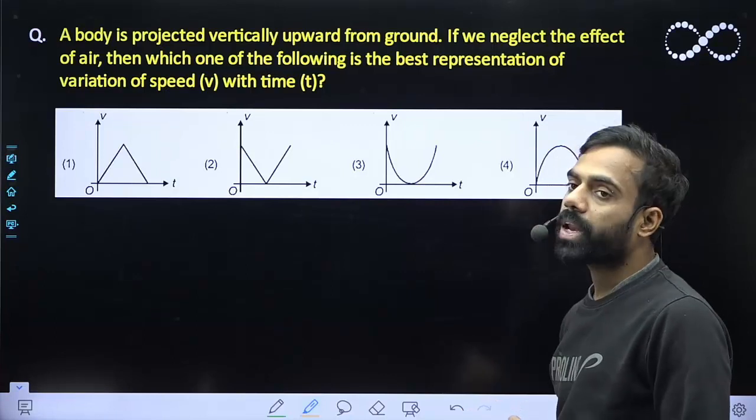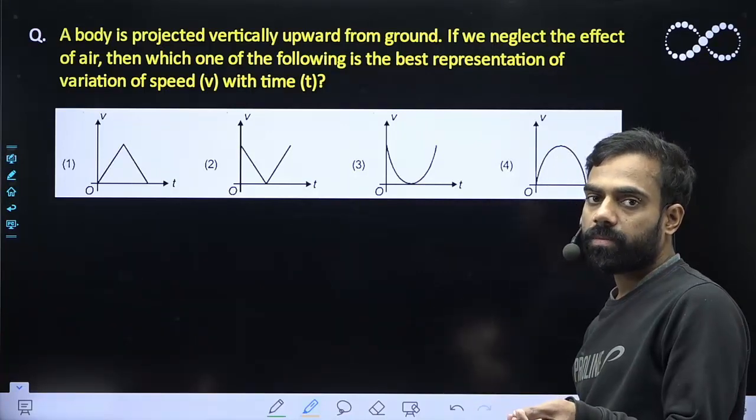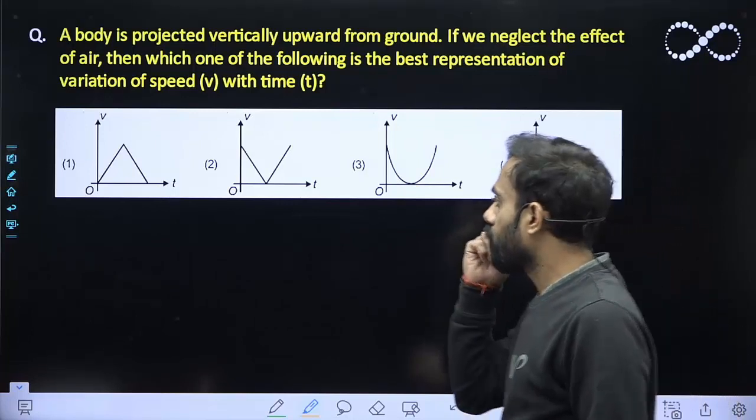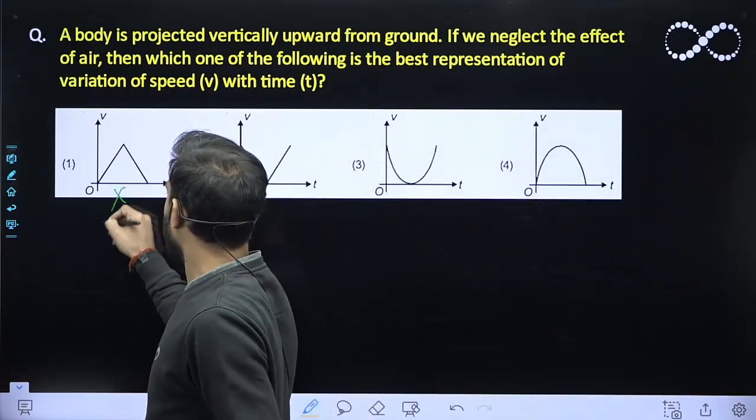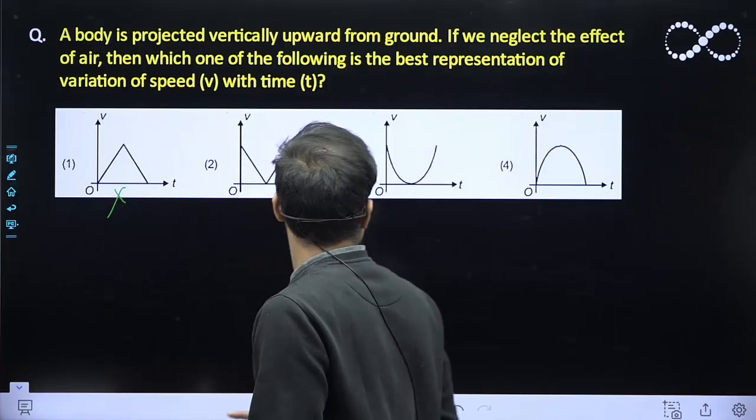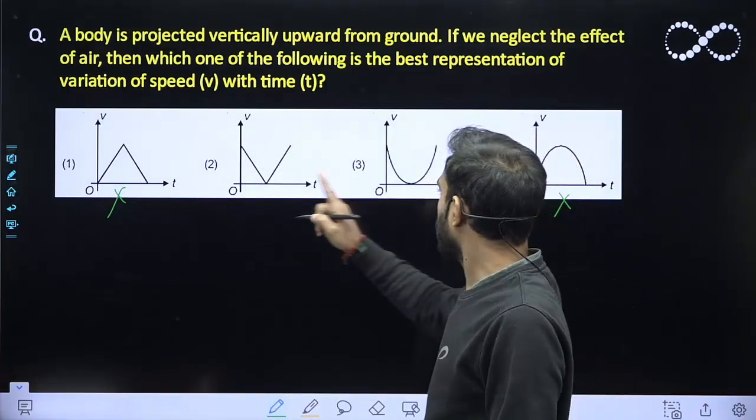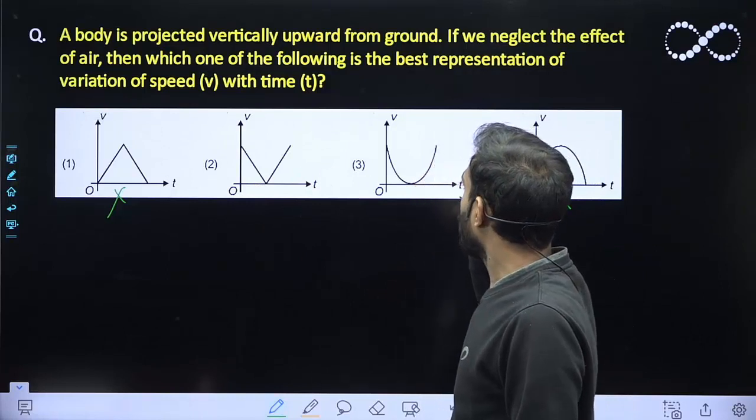Initial speed can never be zero because you are projecting with some speed here. So at t is equal to 0, there must be some speed. This can never be there because initial speed is zero. This can also not be possible because initial speed is zero. Only the candidates are 2 and 3.